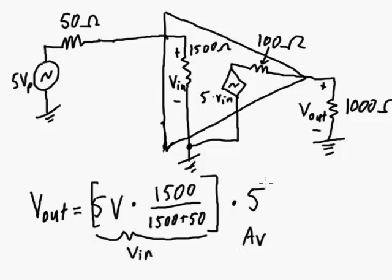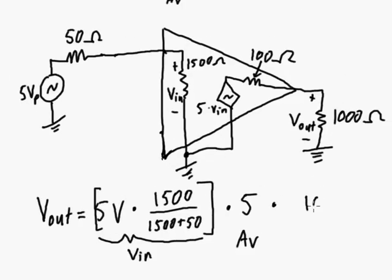So we've got AV times V in, and then times the voltage divider network here at the output. So we'll have some voltage drop across that 100 ohm resistance, and the rest across this 1000 ohms. And our V out is across the 1000 ohms, so we'll have 1000 over 1000 plus 100. And that works out to 22 volts.